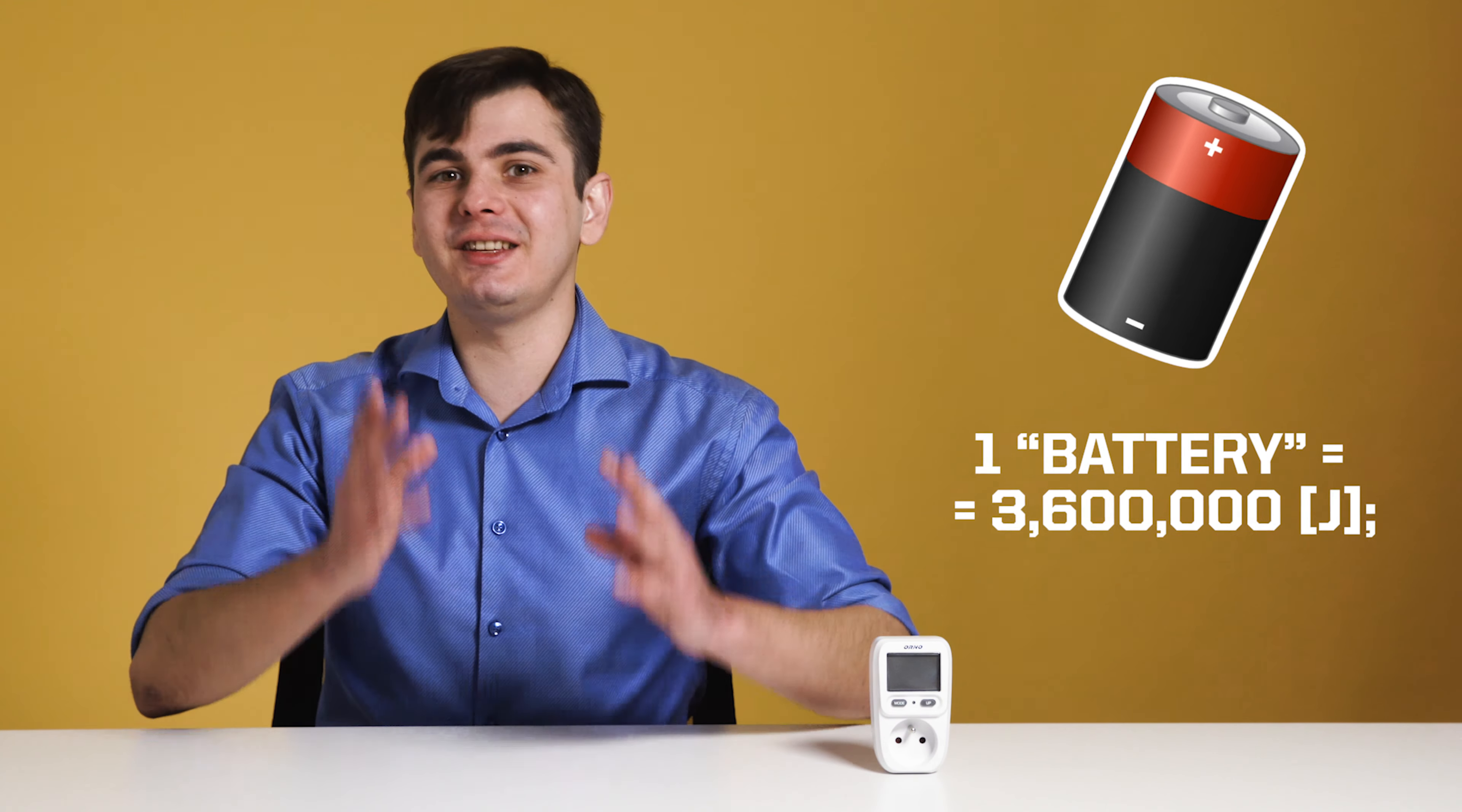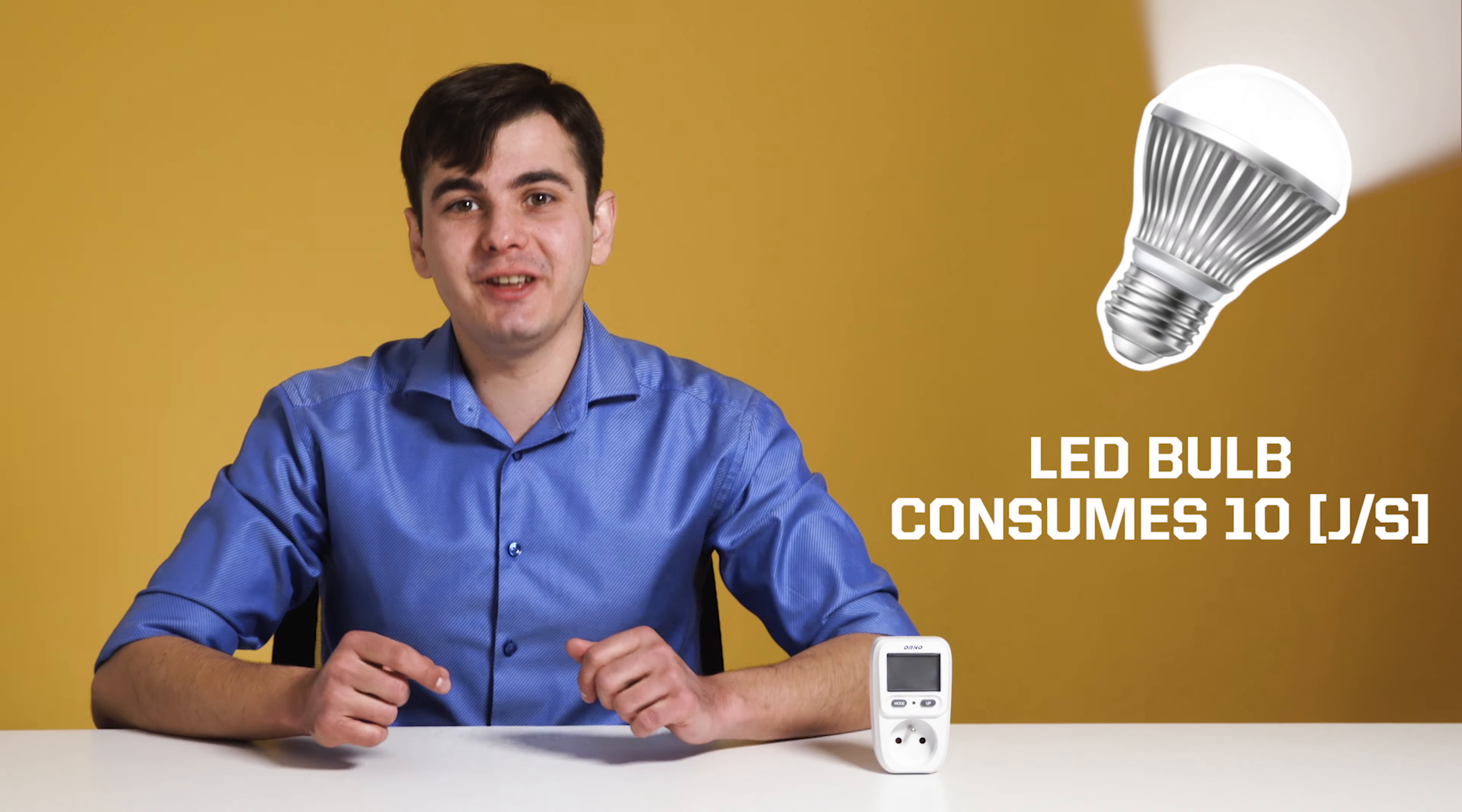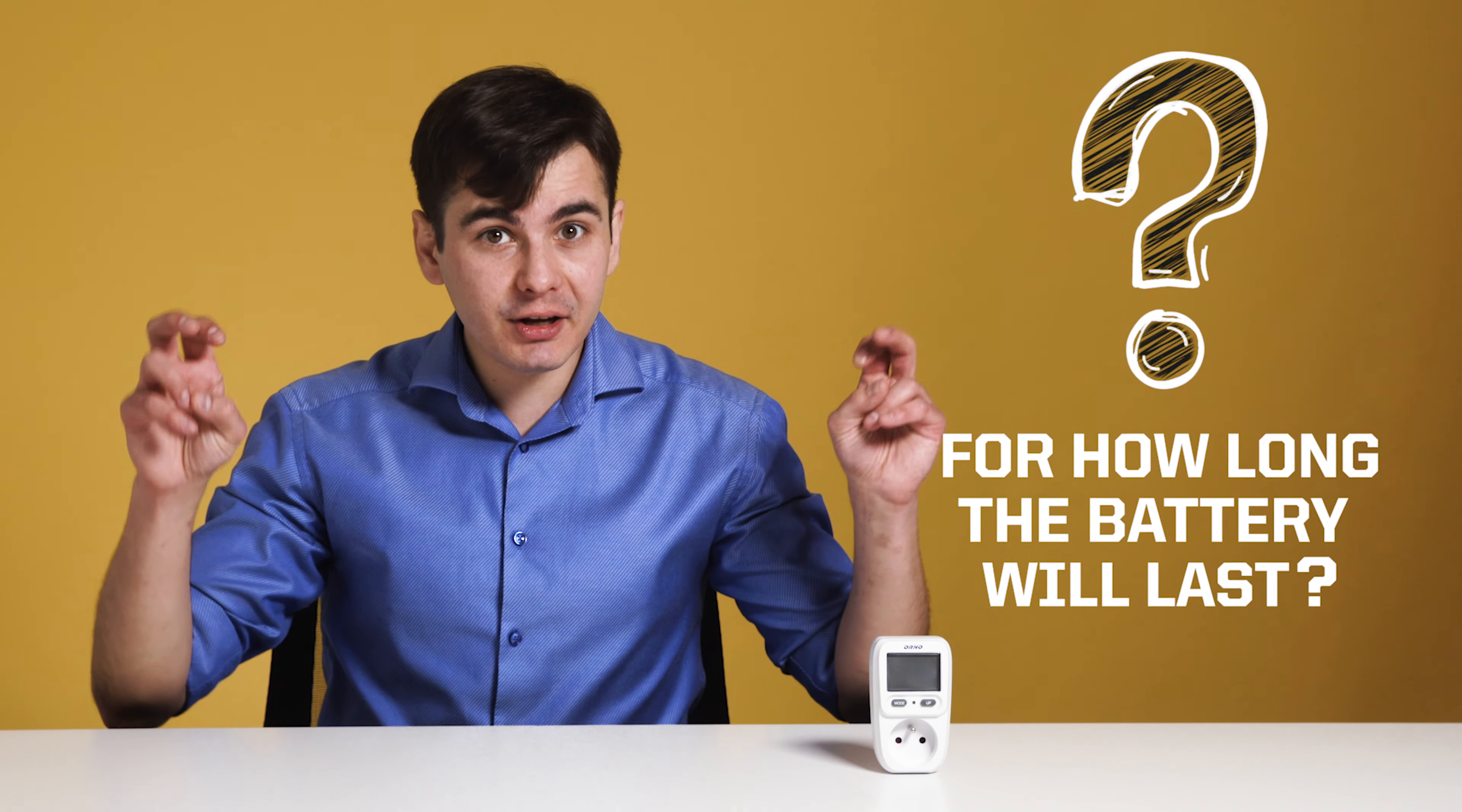You buy from your supplier a battery of 3,600,000 joules. You use an LED light bulb that consumes 10 joules per second. For how long can you power your LED before the battery is dead? You see, that's the point. It becomes very messy.